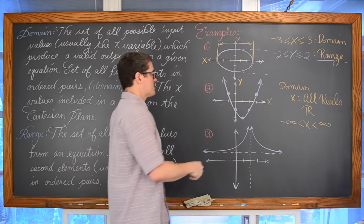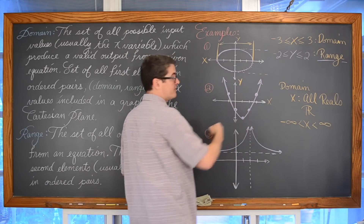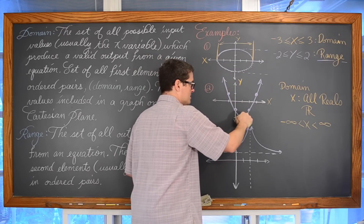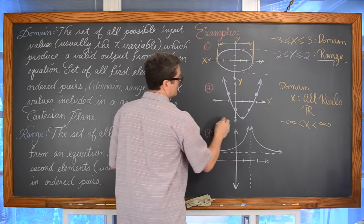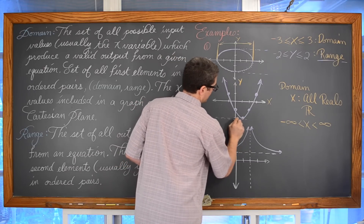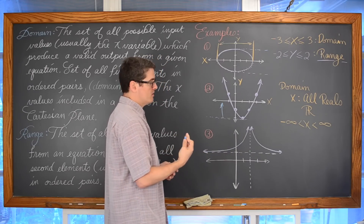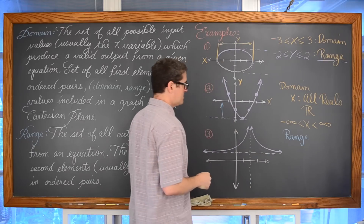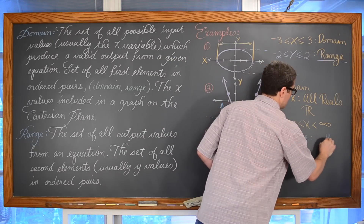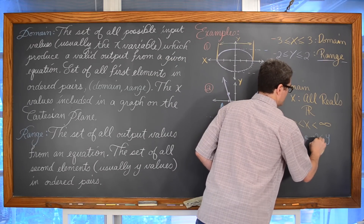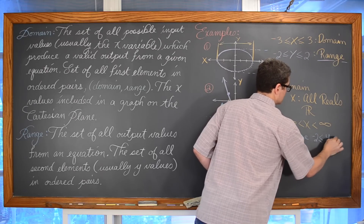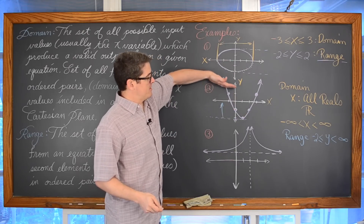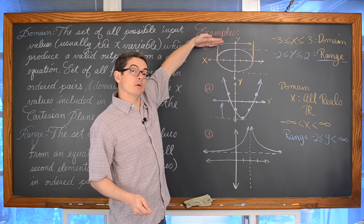And the range — well, all these points are included now with an infinite number of points. The smallest y value, or the point farthest down on this graph, is negative two, and from there the graph just goes up forever. So the range is y is greater than or equal to negative two and less than infinity, because that parabola is opening upward forever and the y values just keep getting bigger and bigger. The smallest y value included is the concrete value of negative two.